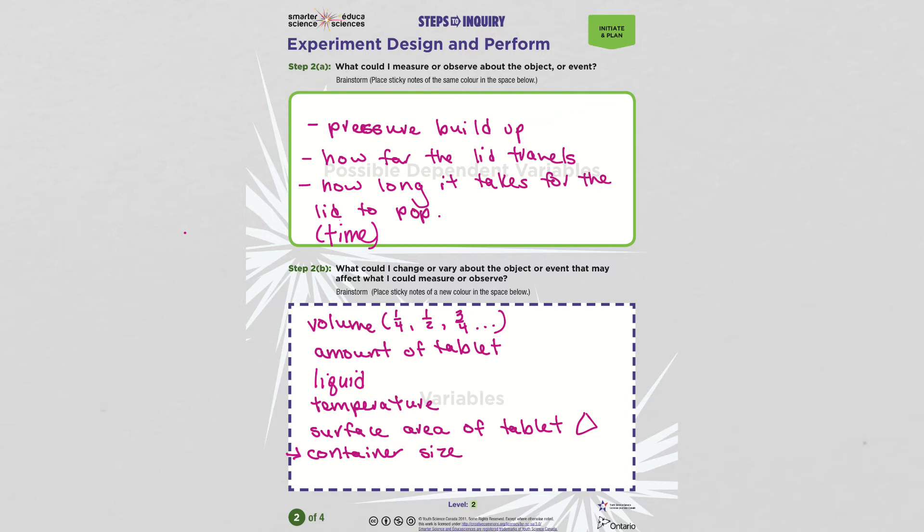I could also change the surface area of the tablet. I'd always use the same amount of tablet, but maybe sometimes I would break it into smaller pieces, bigger pieces, a whole piece, and then maybe grind it up into powder. And then the last one is the container size. I could change that. That one's a little harder to change though, because then it might take forever for the lid to pop off if you use the same volume or amount of tablet.